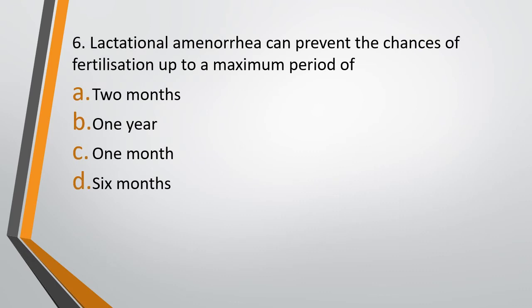Question 6. Lactational amenorrhea can prevent the chances of fertilization up to a maximum period of — Option A: 2 months. Option B: 1 year. Option C: 1 month. Option D: 6 months. The correct answer is Option D — 6 months.